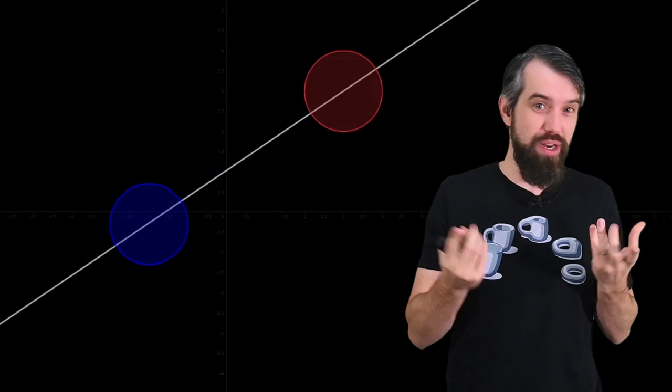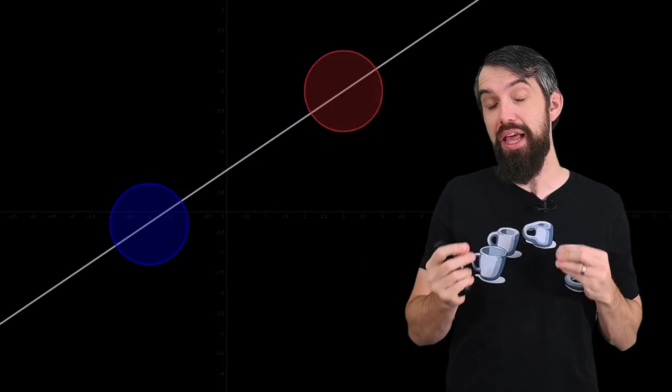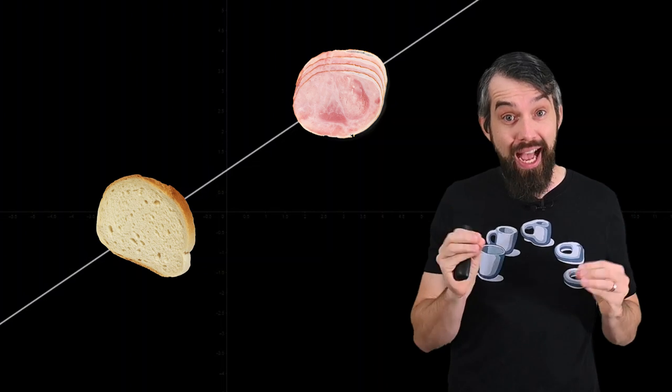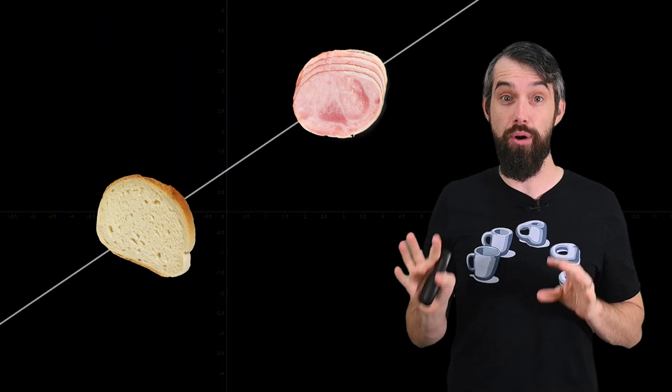Again, easy to visualize in this case where my two objects are circles and lines through the midpoints are always going to cut them in half, but the real magic is that the exact same argument works no matter what weird shape or orientation my objects are in.